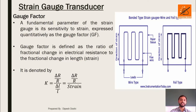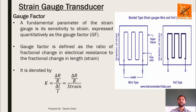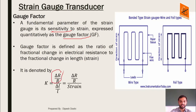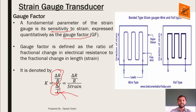Gauge factor is a fundamental parameter of a strain gauge expressing its sensitivity to strain quantitatively. Gauge factor is defined as the ratio of the fractional change in electrical resistance to the fractional change in length. The fractional change in length is given by strain, so instead of delta-L by L, we write strain in the formula.